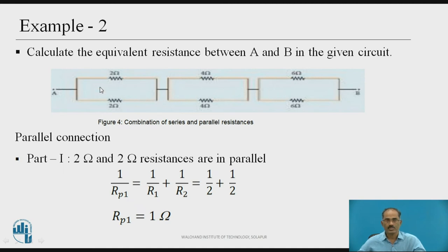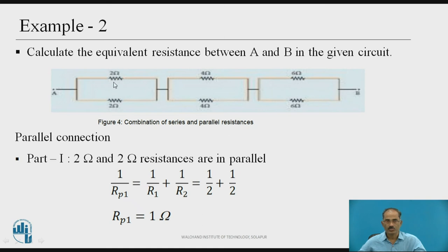Let us consider the first parallel combination — Part 1. In Part 1, the 2 Ω and 2 Ω are in parallel. Therefore, their equivalent resistance: 1/Rp1 = 1/R1 + 1/R2 = 1/2 + 1/2. This comes out to be Rp1 = 1 Ω. That means the combination of these two parallel resistances has an equivalent resistance of 1 Ω.